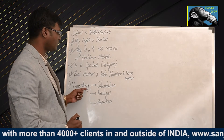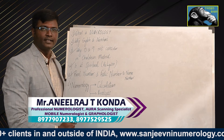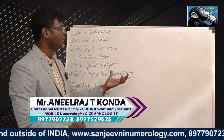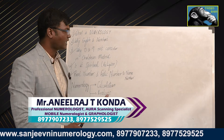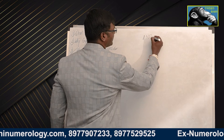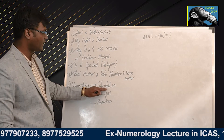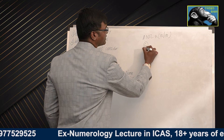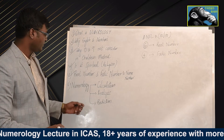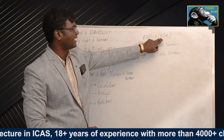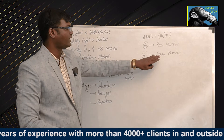Numerology has three components: numerology calculation, numerology analysis, and numerology prediction. In numerology calculation, you write a name, assign numbers, and add them — for example, a name might give 10 by 18. Using the date of birth, 6 is the real number and 4 is the fadic number. You can apply Chaldean or Pythagorean methods to get these calculations.